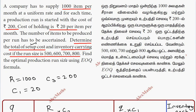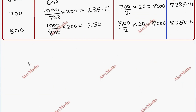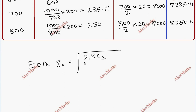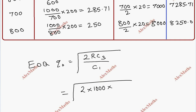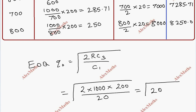Now find the optimal production run size using the EOQ formula. The formula is the square root of 2 into R into C3 divided by C1. So square root of 2 into 1000 into 200 divided by 20. After calculation, we get a value of 141.42.